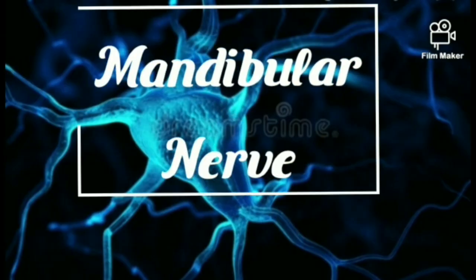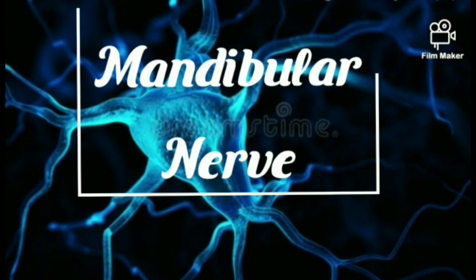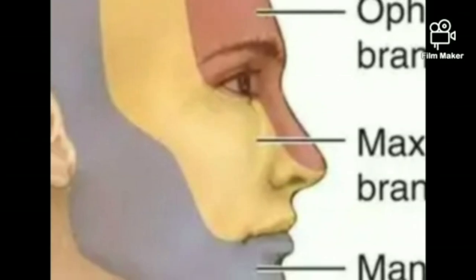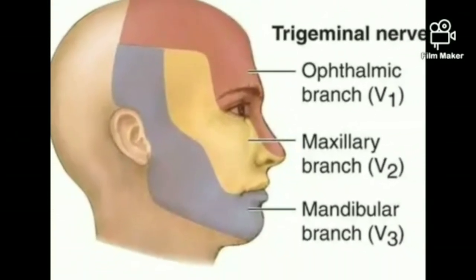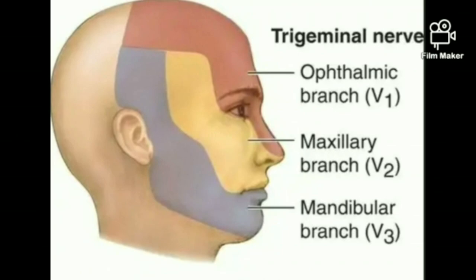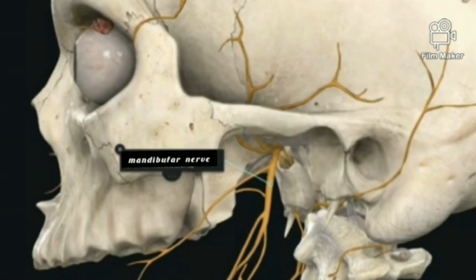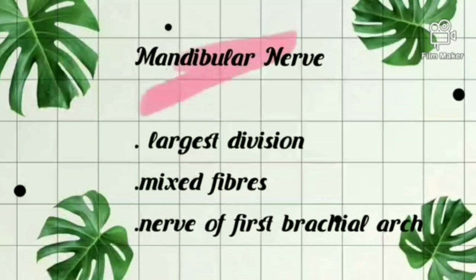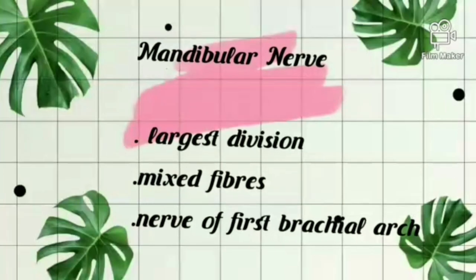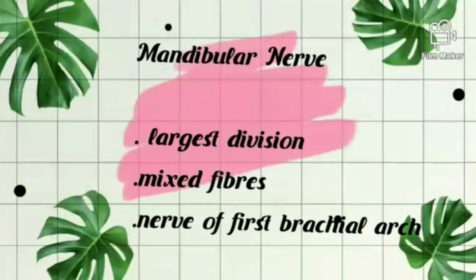Hello everyone, we are going to discuss about the topic mandibular nerve. The trigeminal nerve is divided into three divisions: ophthalmic, maxillary, and mandibular division. The mandibular division is the largest division among them. It has both sensory and motor fibers. It is the nerve of the first branchial arch.